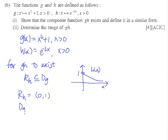Of course, the range of g is always given. So the range of g is from 0 to infinity. In this case, we can conclude that the range of h is a subset of the domain of g. And therefore, we know that our gh does exist.